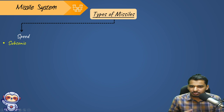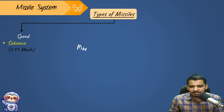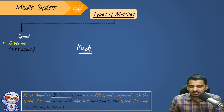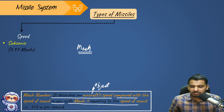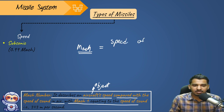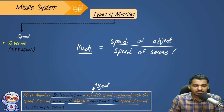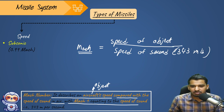The first speed category is subsonic — speed up to 0.99 Mach. The Mach number describes an object's speed compared with the speed of sound in air, with Mach 1 equating to the speed of sound, that is 343 meters per second. Mathematically, Mach number = speed of object divided by speed of sound (343 m/s).